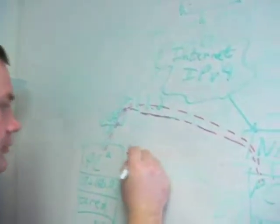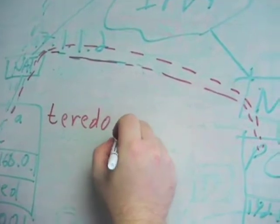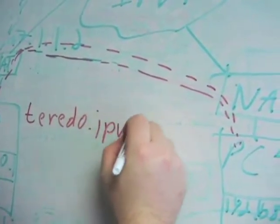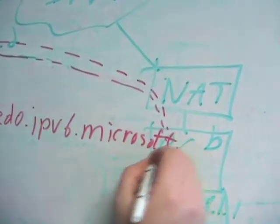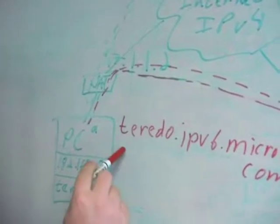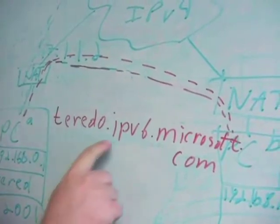You just need to set your edge device to prevent resolution of the hostname teredo.ipv6.microsoft.com. Because the Teredo client, to send its keepalives, finds out the address of this hostname — that's how it finds out how to talk to the Teredo server — and Teredo will not function if it cannot resolve that name. So that's a very easy thing administrators can do to prevent Teredo from working on their networks.